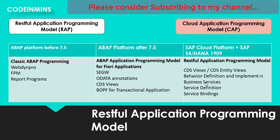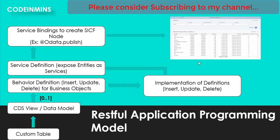The next things are business services, service definition, and service binding. To understand these three things, let's look at the flow when you use the RESTful Application Programming Model to develop a Fiori application or an API. There are two kinds of applications you can create using the ABAP RESTful Programming Model.